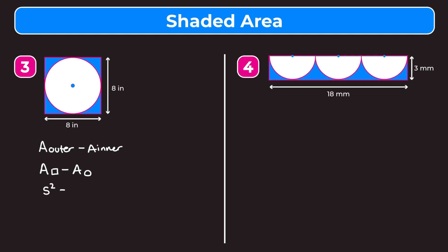To find the area of a circle, the formula is pi times the radius squared. They give us the side length of the square — it's 8 inches — so the area of our square is 8 squared. They don't give us the radius of the circle, but the diameter of our circle is the same as the side length of the square, which is 8 inches. So the radius is half of that: 4 inches.